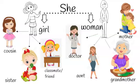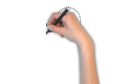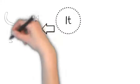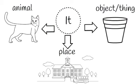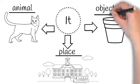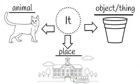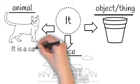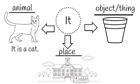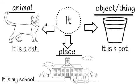Now let me tell you about it. As I told you, it indicates an animal, a place, and an object. So when we talk about an animal, a place, or any object, we will use it. This is a cat, so we will say it is a cat. This is a school, so we will say it is my school. This is a pot, so we will say it is a pot. We will use it when we have to talk about an animal, a place, or a thing.